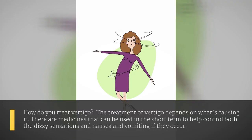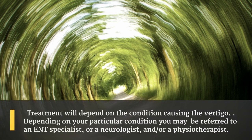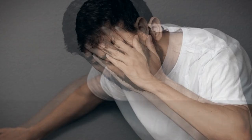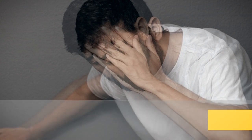The treatment of vertigo depends on what's causing it. There are medicines that can be used in the short term to help control both the dizzy sensations and nausea and vomiting if they occur. Depending on your particular condition, you may be referred to an ENT specialist, a neurologist, and/or a physiotherapist. Vertigo that is caused by BPPV can be treated by physical therapy known as the canalith repositioning procedure.